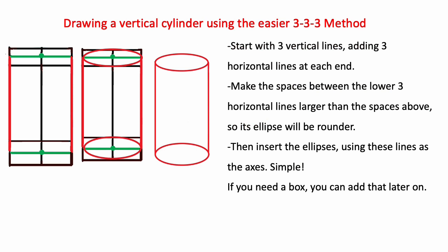To draw a vertical cylinder using the 3-3-3 method start with the three vertical lines here, 1-2-3, and add three horizontal lines on top and three on the bottom. Make these spaces a little larger than the ones on top so the bottom ellipse will be rounder. Then you just use these lines as the major minor axes of your ellipse and you can just put in the ellipse.